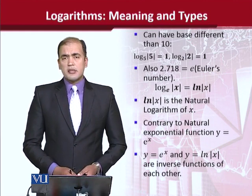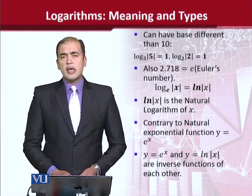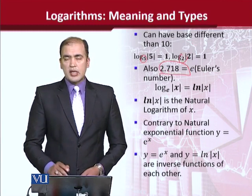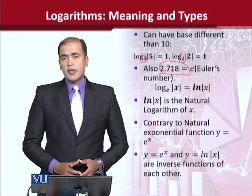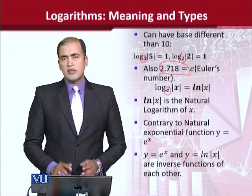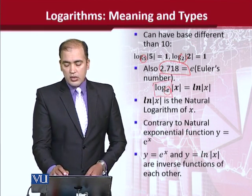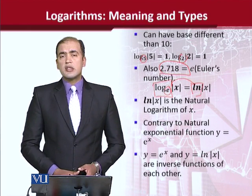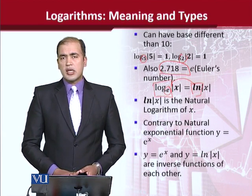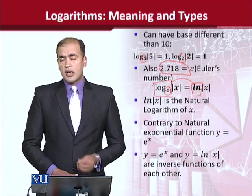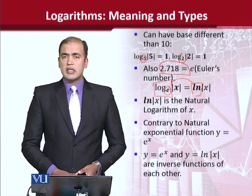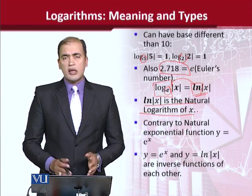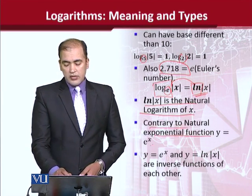The base can be different — it is not necessary that the base is equal to 10. It can be any other value, for example 5 or 2, or most importantly 2.718, which is Euler's number, represented by E. So I can write E in place of the base in the log. When I write this, I show it collectively as 'ln,' which stands for natural log. When the base is E, we call it the natural exponential function, and correspondingly, natural log of x is the natural logarithm of x.